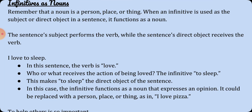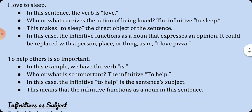The subject of the sentence performs the verb, that is the action, while the direct object receives the verb. For example: 'I love to sleep.' In this sentence, the verb is 'love.' Who or what receives the action of being loved? The infinitive 'to sleep.' This makes 'to sleep' the direct object of the sentence. In this case, the infinitive functions as a noun that expresses an opinion. It could be replaced with a person, place or thing, as in: 'I love pizza.'